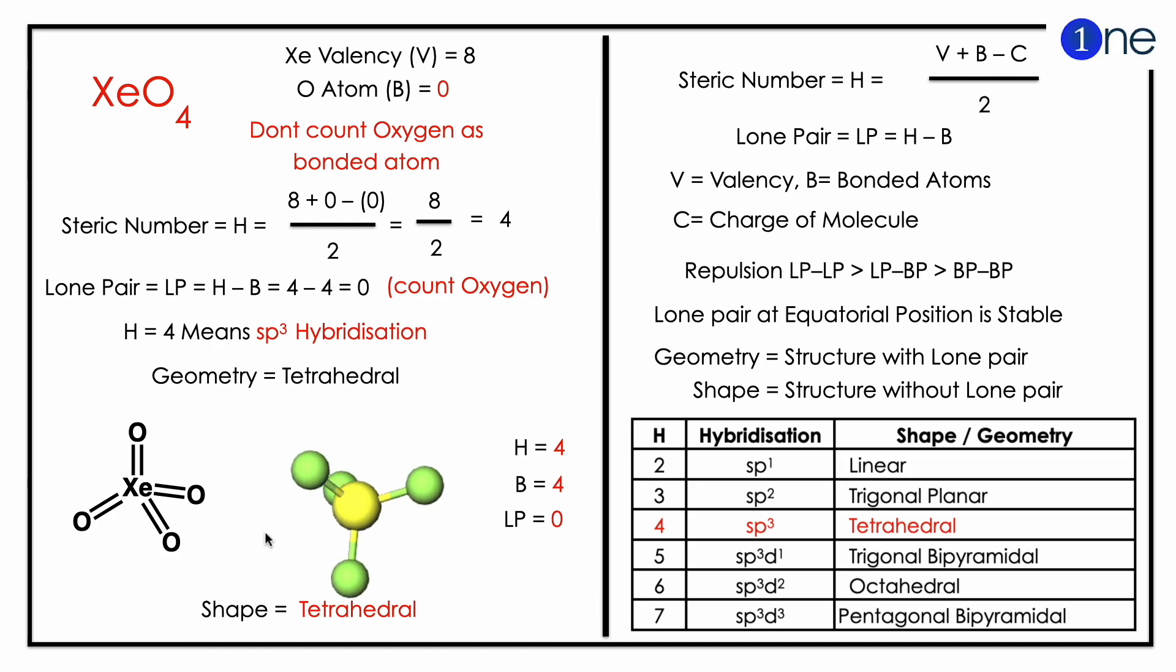From the table, you can realize H4 means sp³ hybridization, so geometry is tetrahedral. For oxygen, comfortably occupy the corner, xenon at the central. So you can easily observe it's a tetrahedral shape. So the shape of xenon tetroxide is tetrahedral.